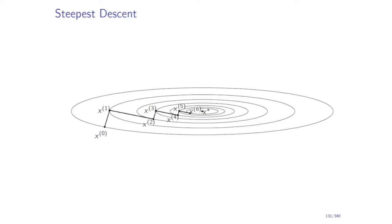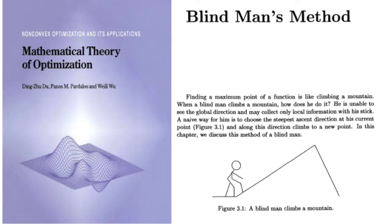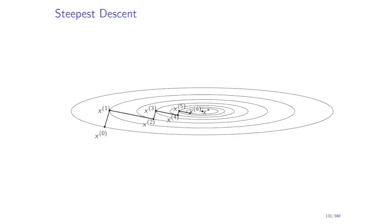For quadratic problems, steepest descent behaves like a blind man — in China it is actually referred to as the blind man method. We don't utilize the global structural properties of f; instead, we focus on the local neighborhood and select the locally best direction. The best decrease is in this direction, but the truly optimal direction would go from x0 directly to x*. If we use second-order derivative information, we can find that direction easily. Using only the gradient provides just local increase-decrease properties, causing the zigzagging behavior.